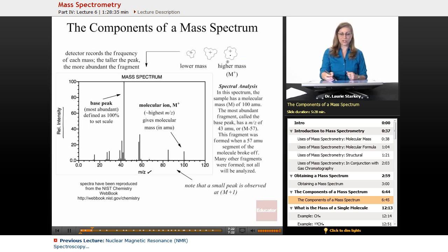So these various charged fragments, remember everything we see in a mass spec represents a charged ion, a plus one. These are going to hit the detector, records the frequency of each mass, and therefore the taller the peak, the larger the signal, that means it's a more abundant fragment.